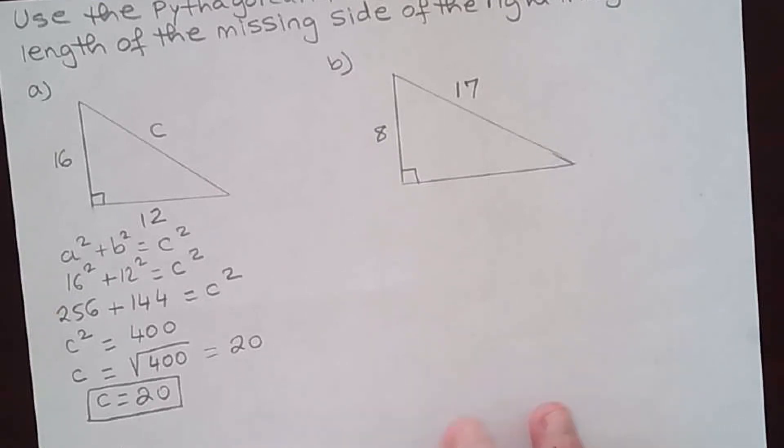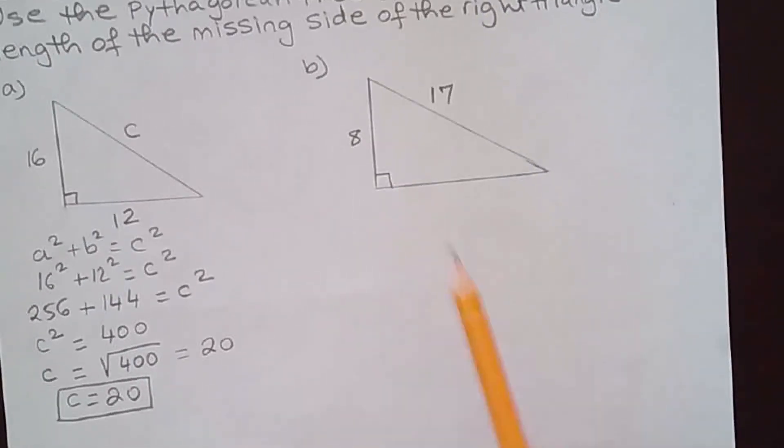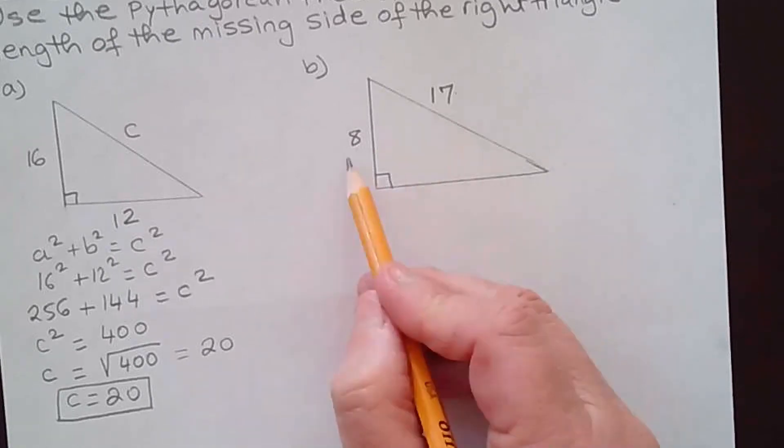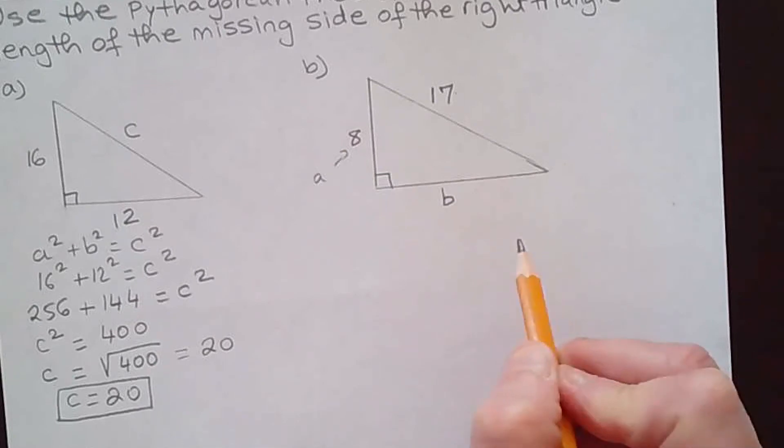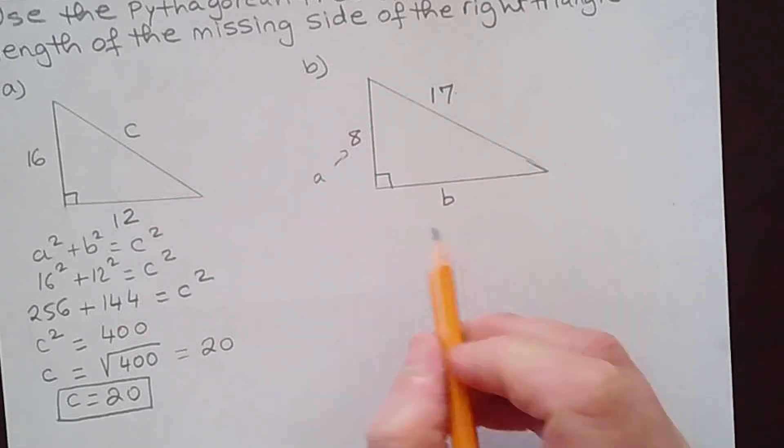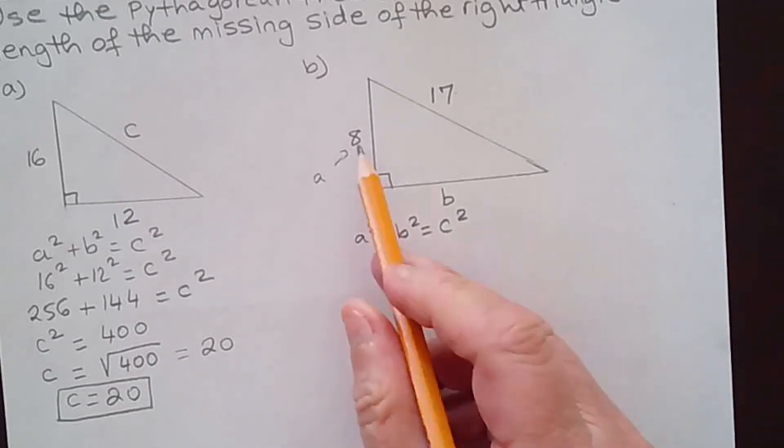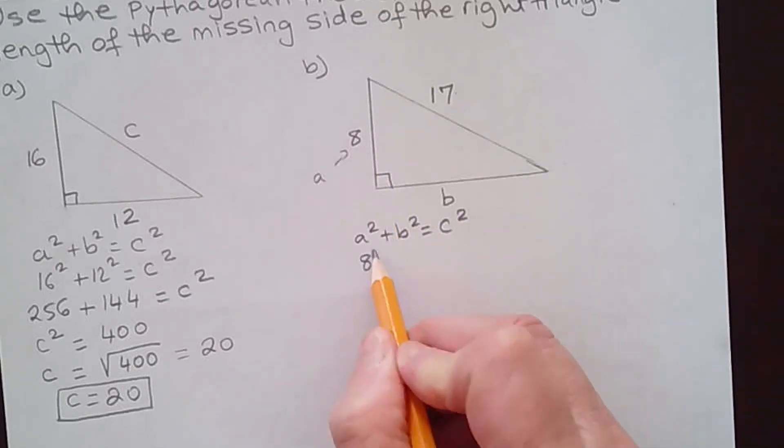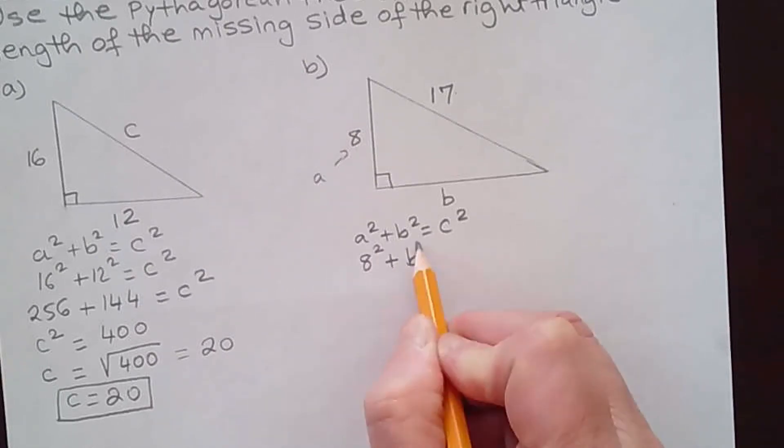I do not have the unit, so it's just 20. This is the hypotenuse. Now doing the second problem, they give me one of the legs and the hypotenuse. I'm missing the other leg. If this is a and this is b, the unknown, using the formula again a² + b² = c².